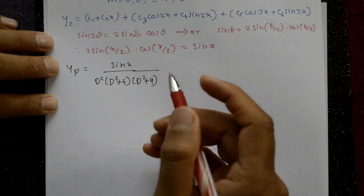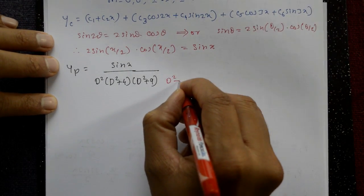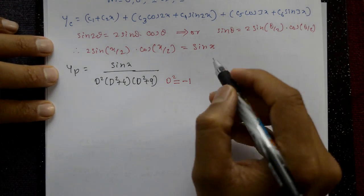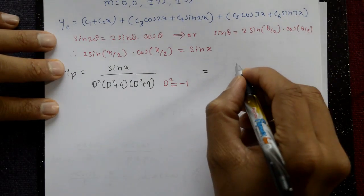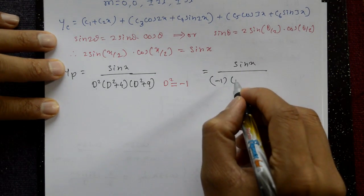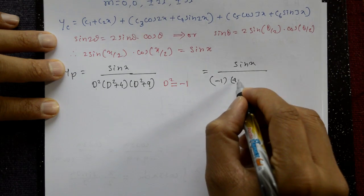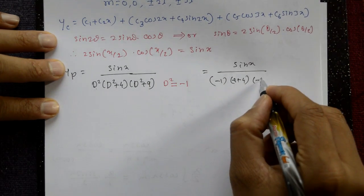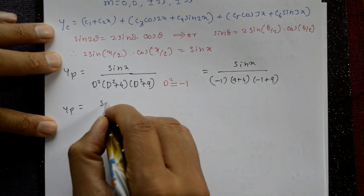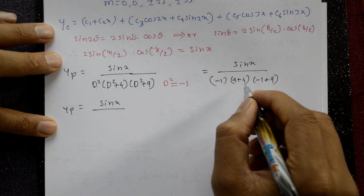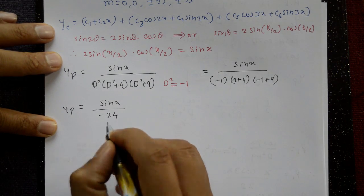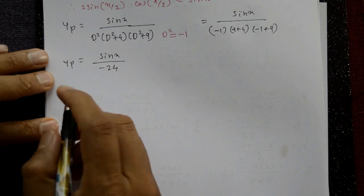This is Type 2, where D-squared equals minus a-squared. Here a equals 1, so D-squared equals minus 1. Substituting: sin(x) upon minus 1 into (minus 1 plus 4) into (minus 1 plus 9), which gives sin(x) upon minus 1 into 3 into 8 = sin(x) upon minus 24. So yp equals sin(x) divided by minus 24.